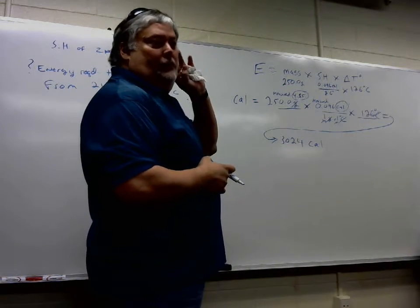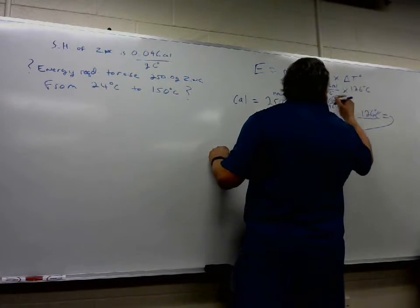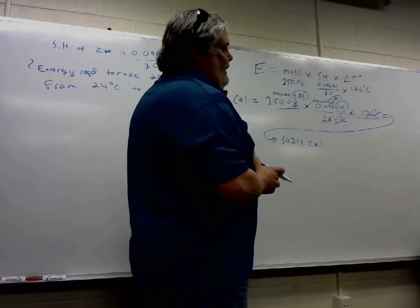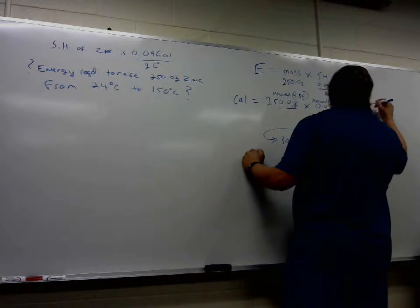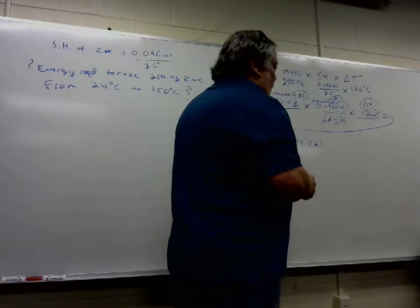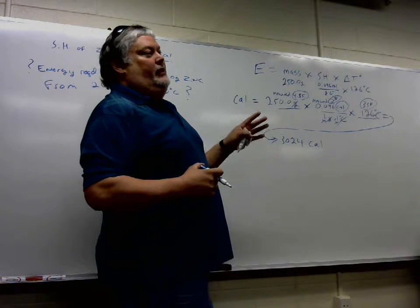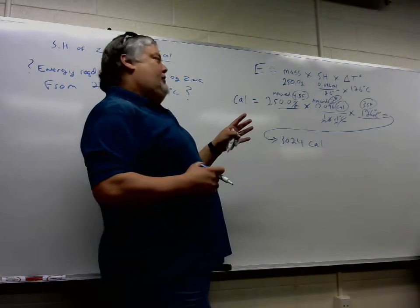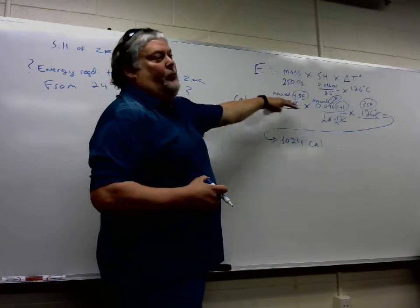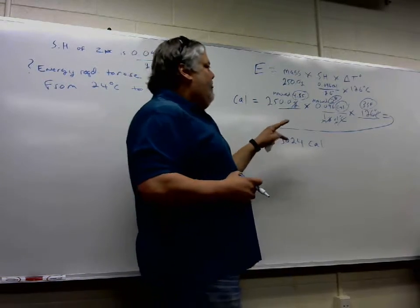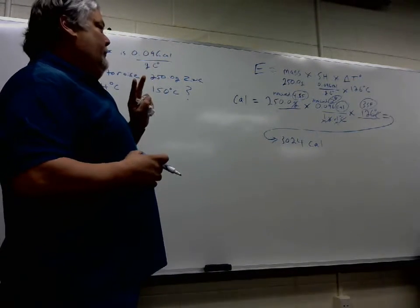How many significant figures in 0.096? Two. So we've got two sig figs. And then we've got the temperature change, or delta T, 126—we all know that's three sig figs. So when you're multiplying and or dividing, you always use the least number of significant figures based on the information throughout the framework of the problem that are measured numbers, not exact numbers. In this case, the least number of sig figs is two. So we need to put 3024 into two significant figures.